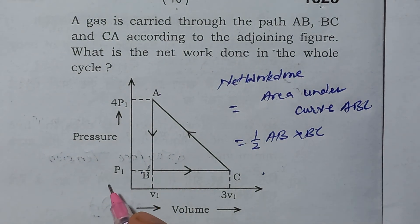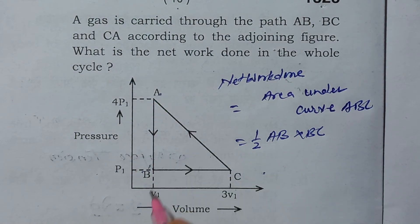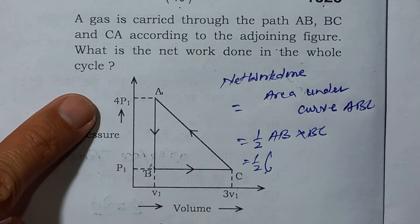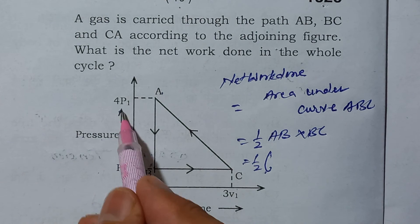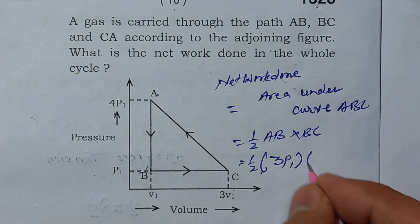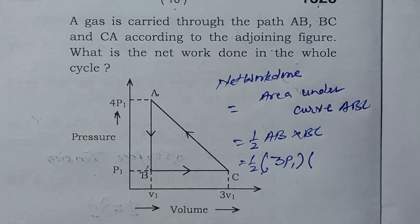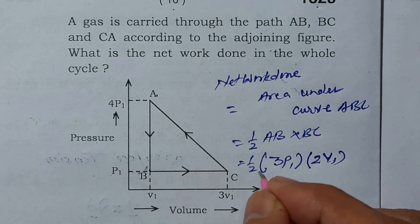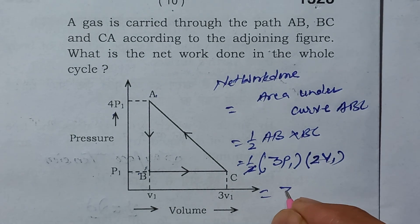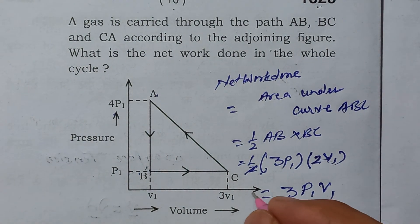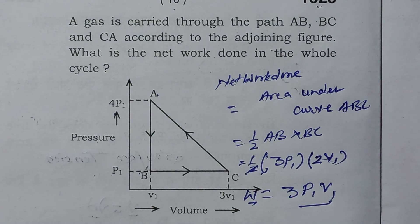From here, you can see AB, half AB is 4P1 minus P1, which is 3P1. And BC is 3V1 minus V1, that is 2V1. That will be 3P1 V1, is the right answer. This is the work done.